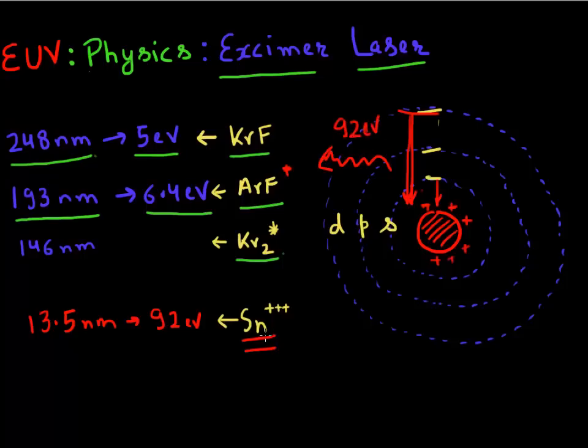First of all, since at this energy your photon gets absorbed by everything, to generate this plasma or to generate this light source, everything has to be in vacuum. So one of the challenges is generating this EUV photon or actually transporting this EUV photon all the way to your wafer.